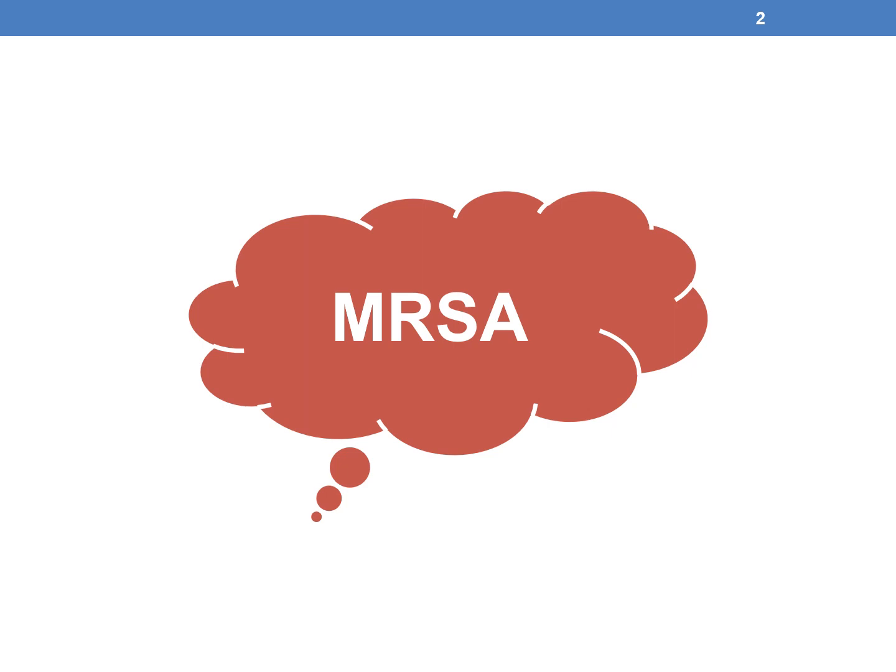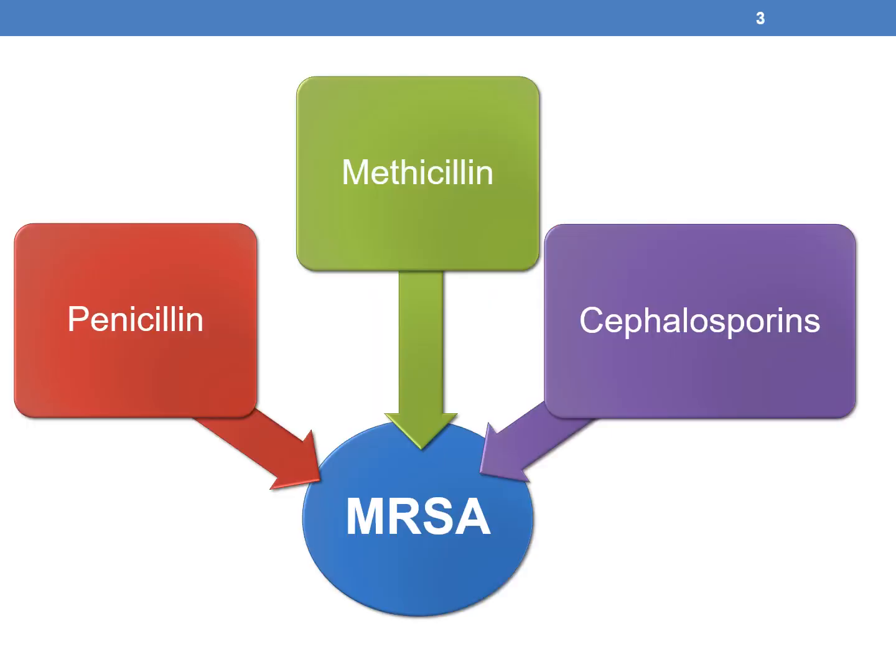What is MRSA? MRSA is Methicillin-resistant Staphylococcus aureus. This strain of bacteria is resistant to antibiotics — hence the name 'resistant.' MRSA is resistant to penicillins, methicillin, and cephalosporins.